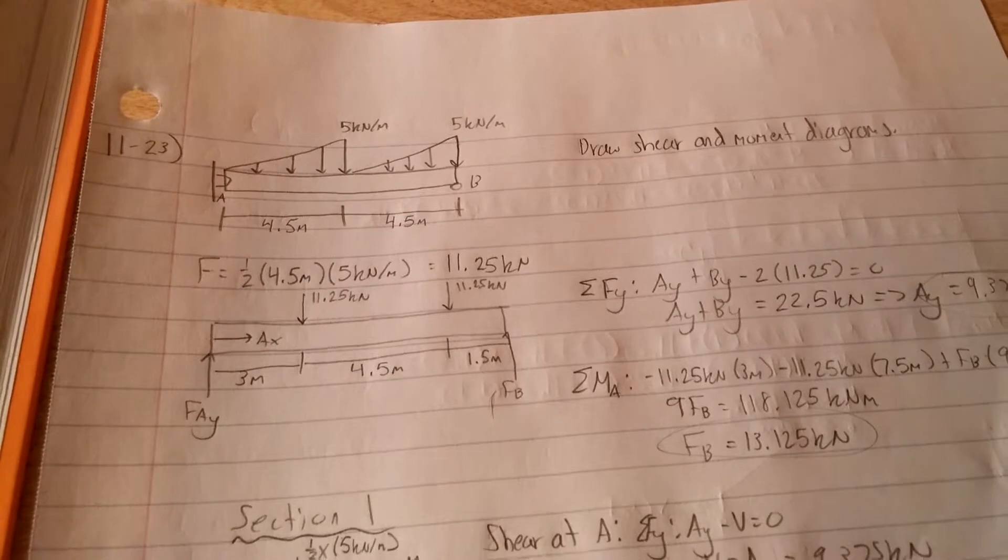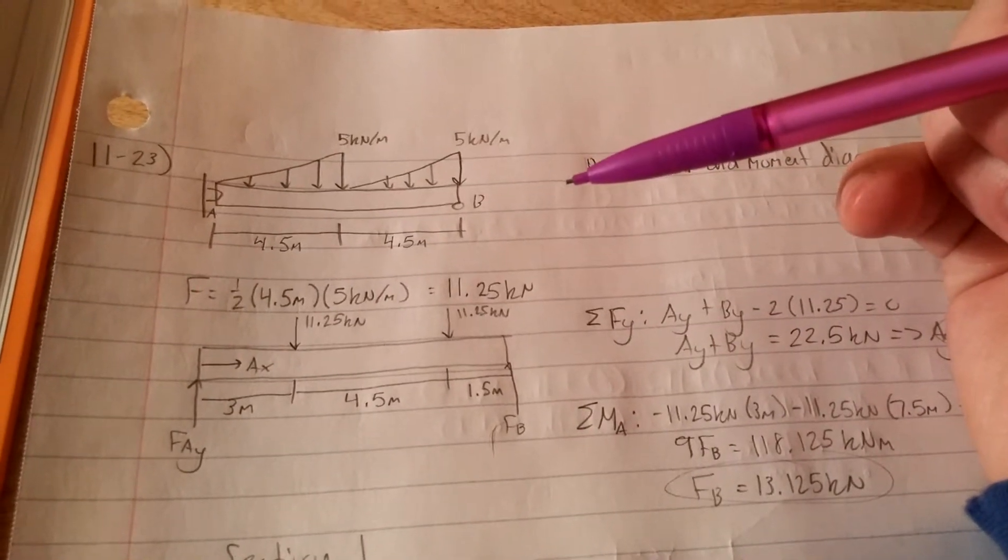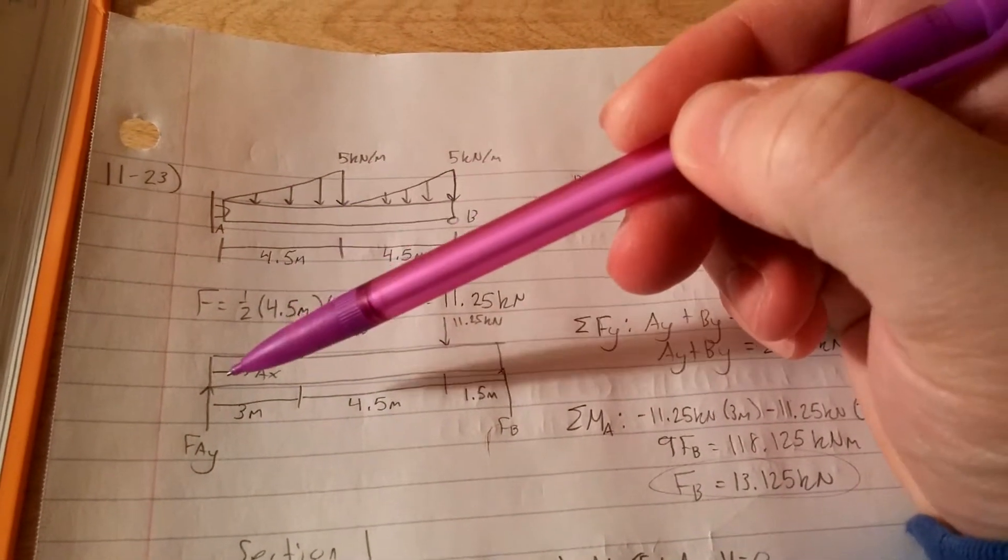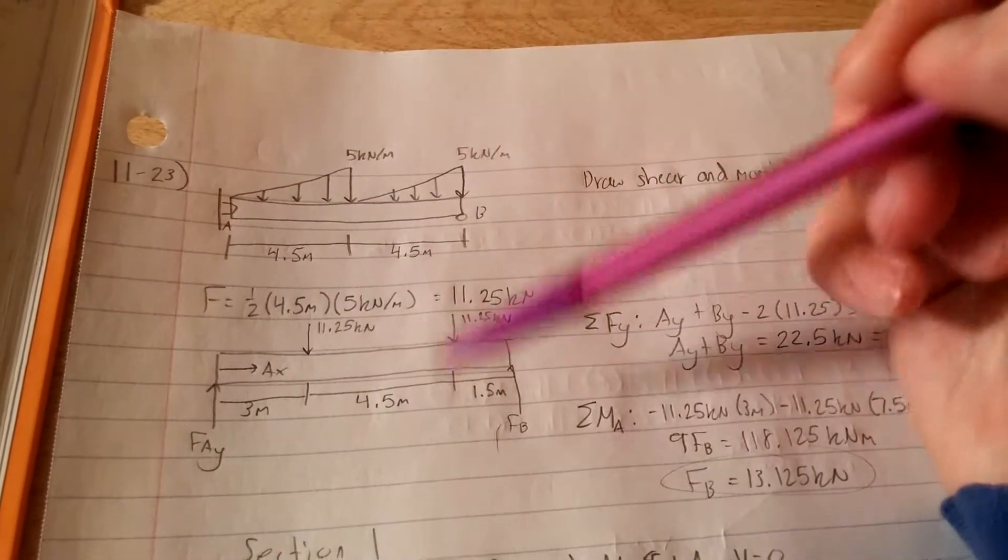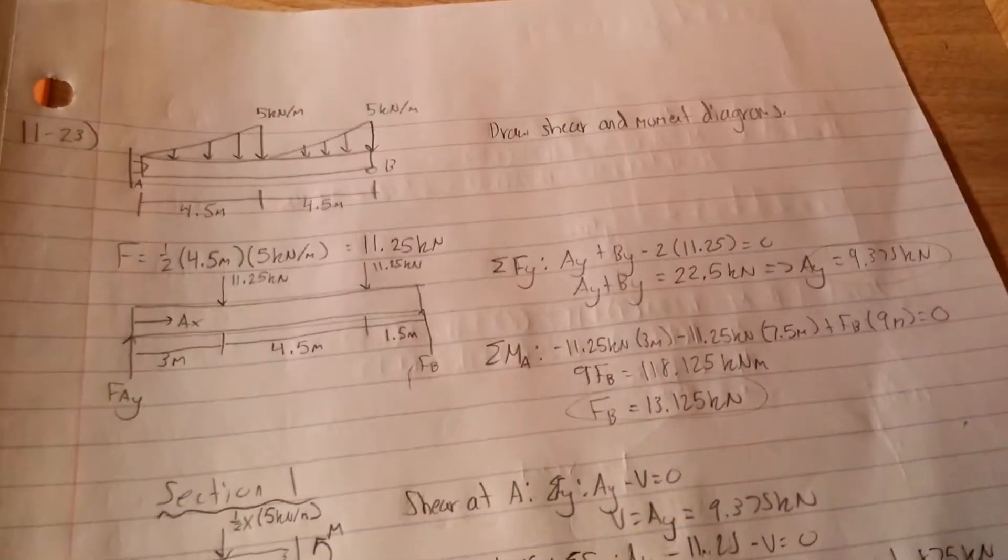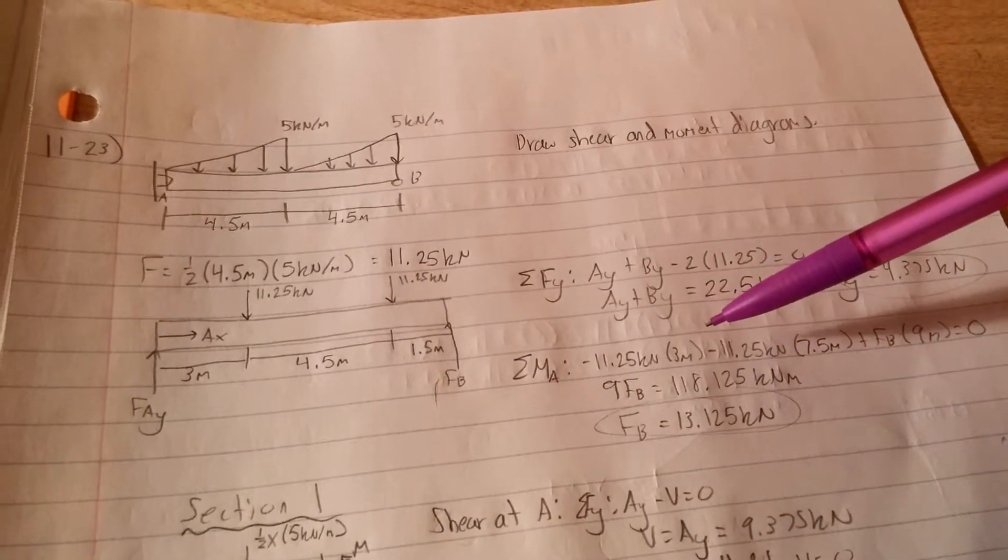We have to worry about the first 11.25. And the sign for both 11.25s are going to be the same, they're just going to be different moment arms. If we look relative to A, these two will create a negative moment because they go clockwise.